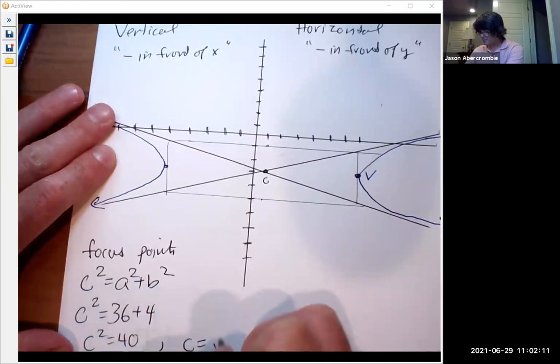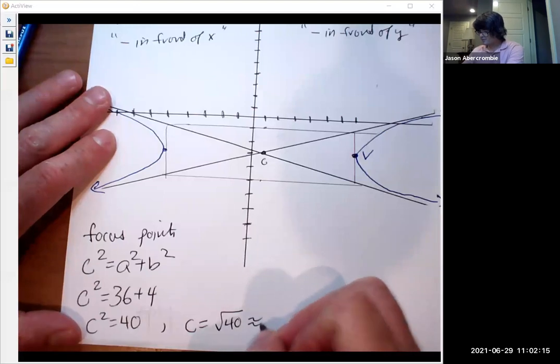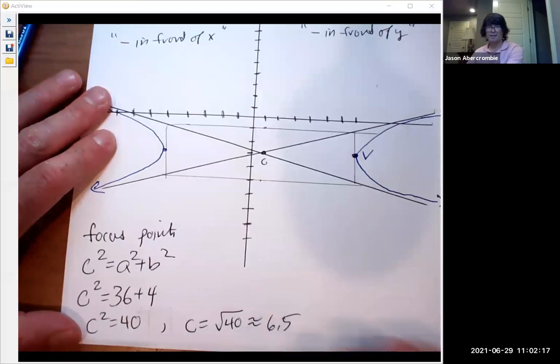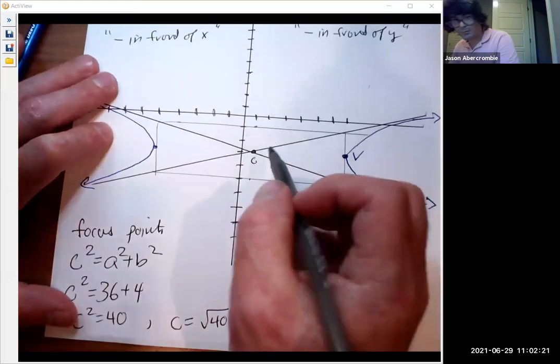So C squared is 40. C equals the square root of 40, which is about, let's just call that 6.5. I'm going to kind of guess. And so 6.5 is how far you go from the center. Watch this.